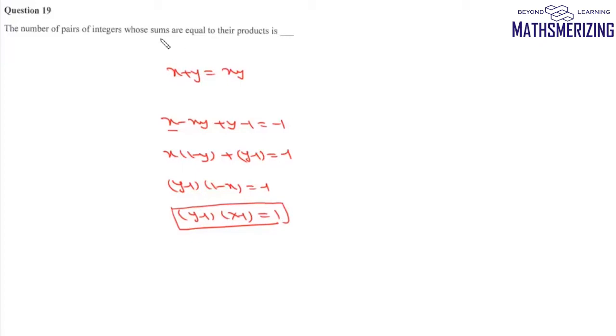Now since x and y they're both integers, that means these two factors should be integers, and the product of two integers is 1 only when either both of them are 1 or when both of them are minus 1.